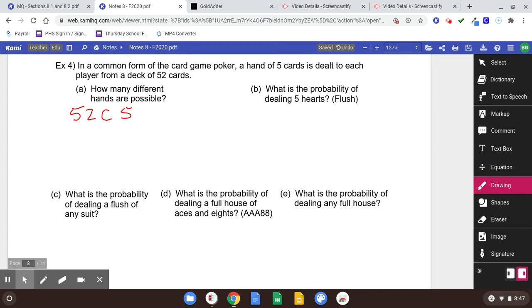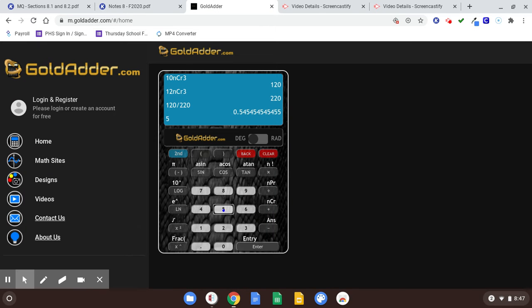How many different hands are possible? So notice this is not a probability question. We want five out of 52. Order doesn't matter in a card game.